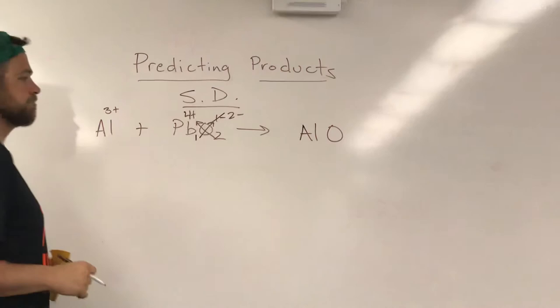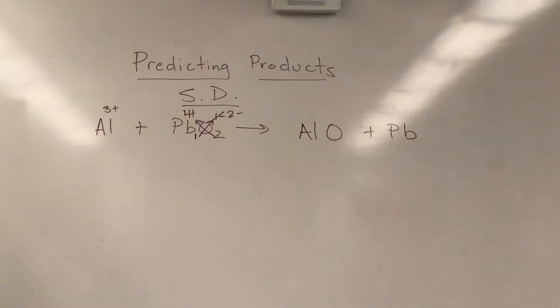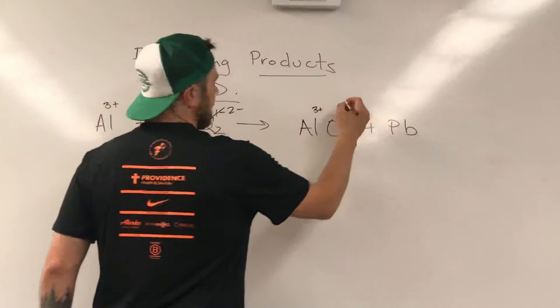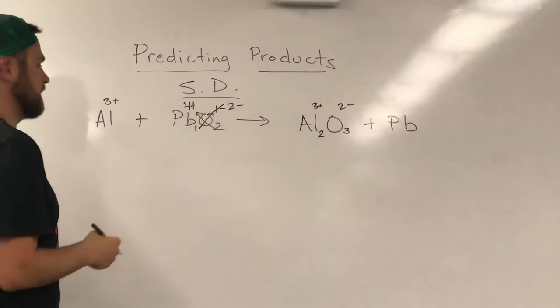We're gonna take aluminum, we're gonna put it right here, we're gonna bond it to O. We're creating a new compound, so we're gonna have to cross charges, but for now that's good. And then lead (Pb) is gonna get kicked out. Now let's cross our charges. We said that aluminum always is three plus, oxygen is always two minus, so when we cross those we're gonna end up with Al₂O₃.